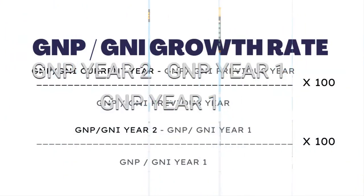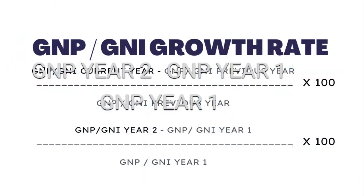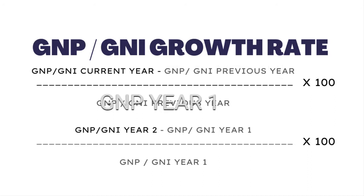To get the growth rate percentage, we subtract GNP Year 1 from GNP Year 2, divide the difference by GNP Year 1, then multiply the quotient by 100.